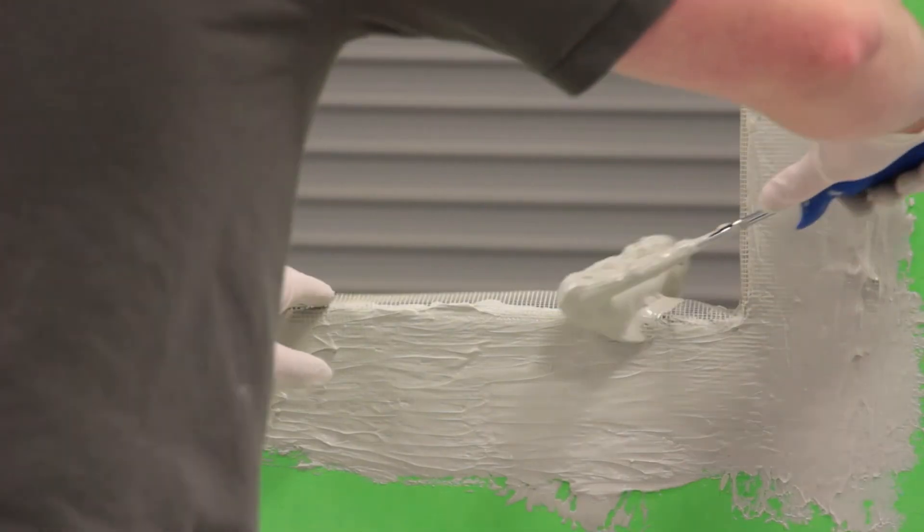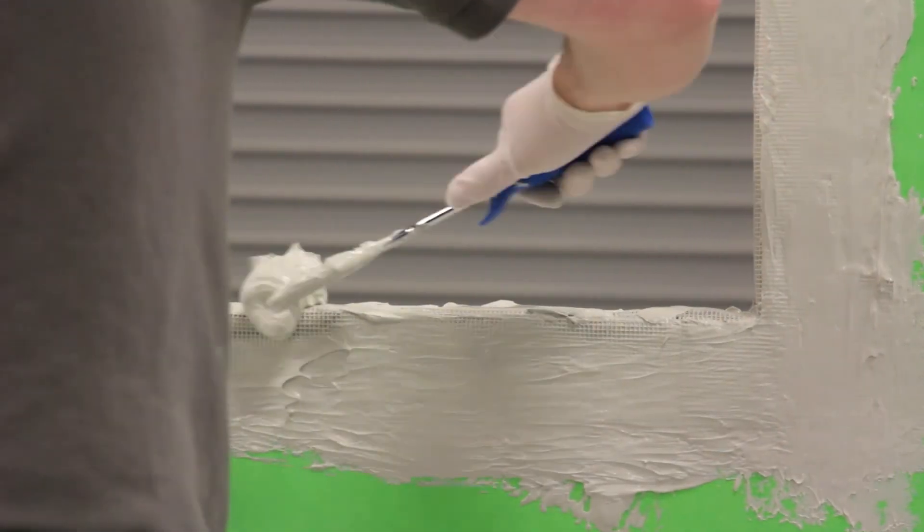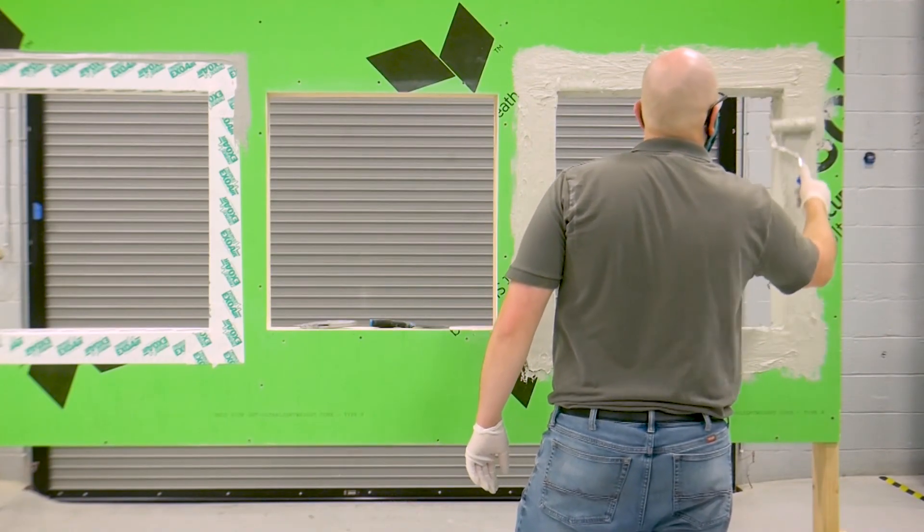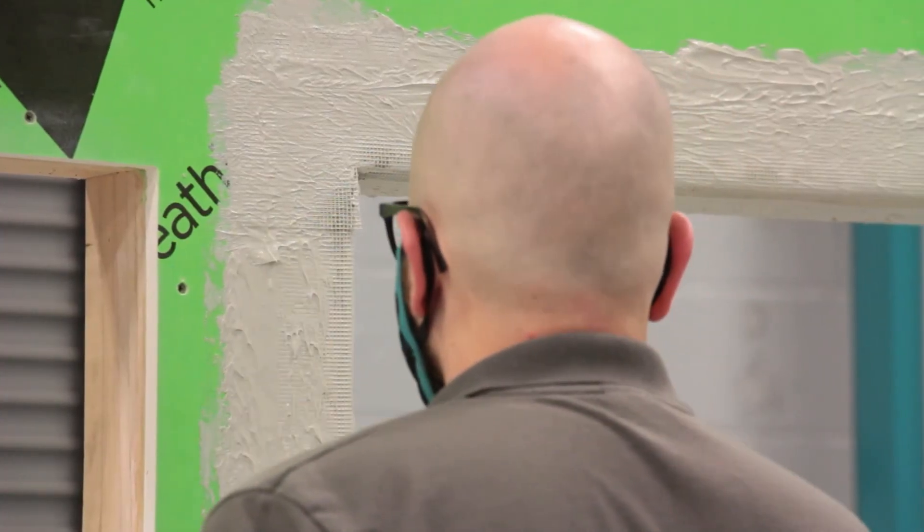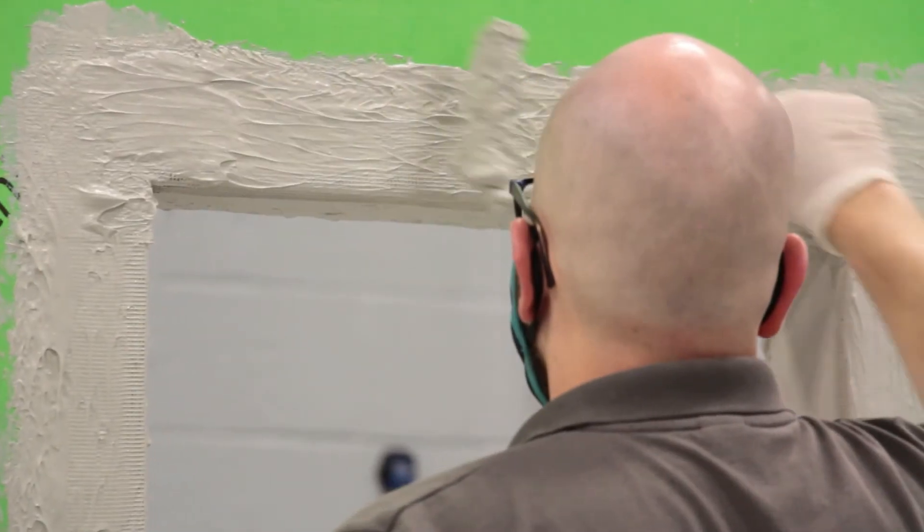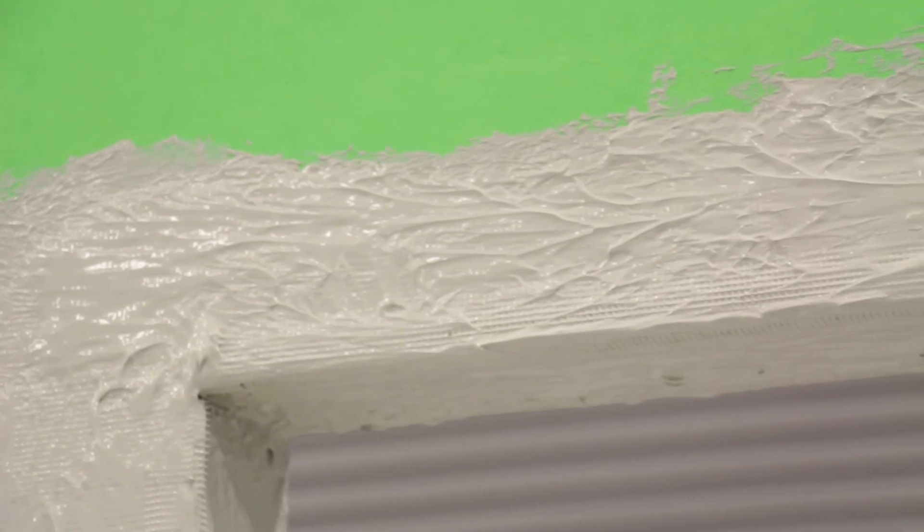Cut the mesh at the corners and fold it into the rough opening. While still wet, apply a second coat of ExoAir 230 at 35 wet mills, fully encapsulating the mesh so that it is no longer visible.